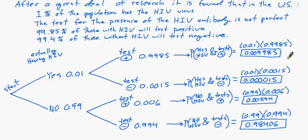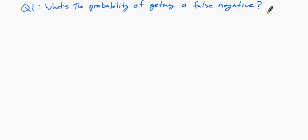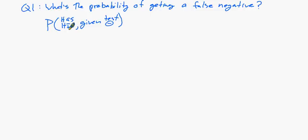Now let's get to some important questions. The real important questions are: what's the probability of getting a false negative and a false positive? We can word the false negative as: what's the probability that someone has HIV given a negative test? That is a false negative.